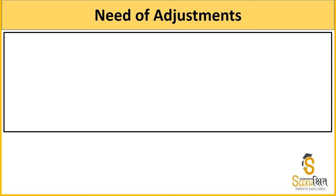इन adjustments की need क्या है? सबसे पहला कारण: हमारे accounting principles में कहा था कि financial statements का true and fair view होना चाहिए। अगर सही accounting period की transactions उस period में record नहीं होंगी, तो financial statements true and fair नहीं होंगी और सही financial position depict नहीं करेंगी।